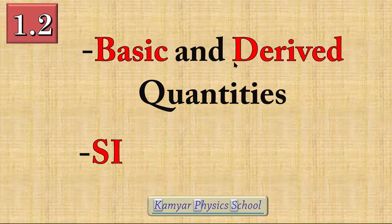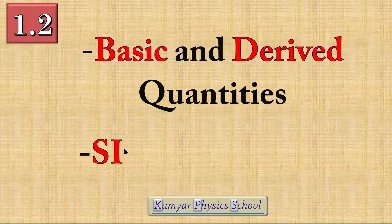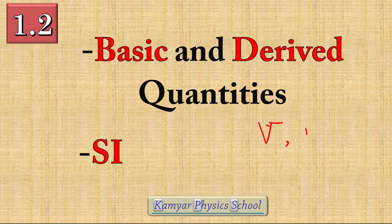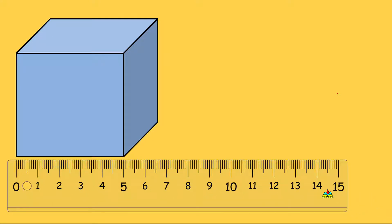Hello everyone, this video is about basic and derived quantities and also the SI system of international units. I previously told you what a quantity is — quantities like volume, mass, current intensity. I measure a quantity and express it in numbers. For example, suppose I have a rectangular cube with different sides. Using a ruler to measure the horizontal side, the report could be: a equals five centimeters, where a is the notation, five is the size, and centimeter is the unit.